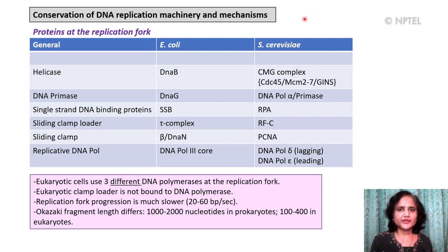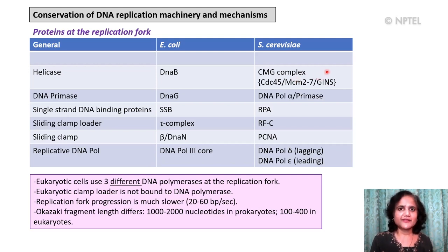This table shows the conservation of the replication machinery in eukaryotes, and the enzymatic counterparts of the E. coli enzymes in the budding yeast Saccharomyces cerevisiae are listed here. The helicase in budding yeast is referred to as the CMG complex, consisting of CDC45, the MCM complex, and GINS proteins. The primase is referred to as DNA Pol Alpha, and the SSB proteins are referred to as RPA or replication protein A.